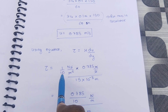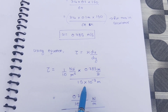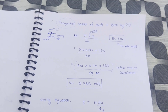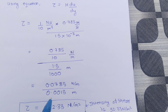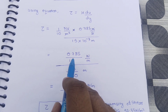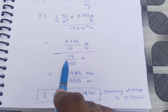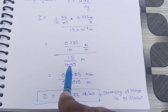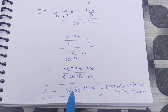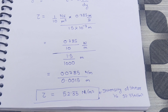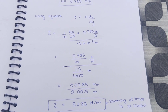Using Newton's viscosity law, tau = mu × (du/dy). Substituting values: mu = 1/10 N·s/m², du = 0.785 m/s, and dy = 1.5×10⁻³ m. After cancelling units (meters cancel, seconds cancel), the intensity of shear tau comes out to 52.33 newton per meter square. This is the final answer. If you have any questions, please ask in the comments.